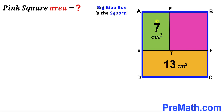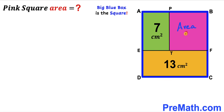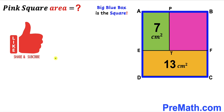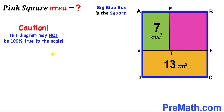The area of the green shaded rectangle has been given as 7 cm², the area of the orange shaded rectangle is 13 cm², and our task is to calculate the area of the pink shaded square. Keep in mind that this big square ABCD is indeed a square, and the figure may not be 100% true to scale.